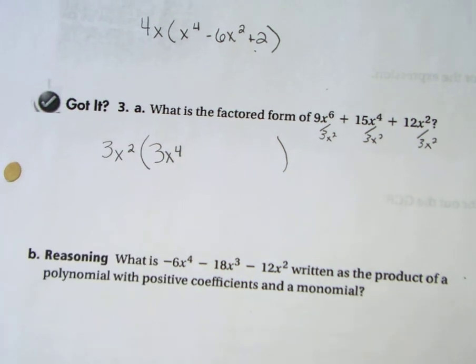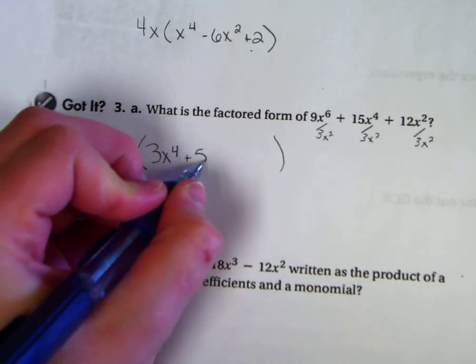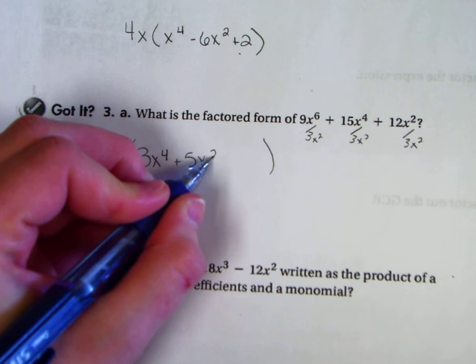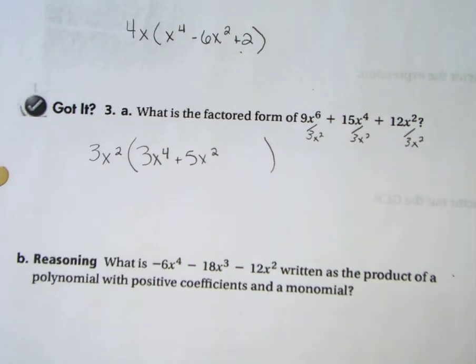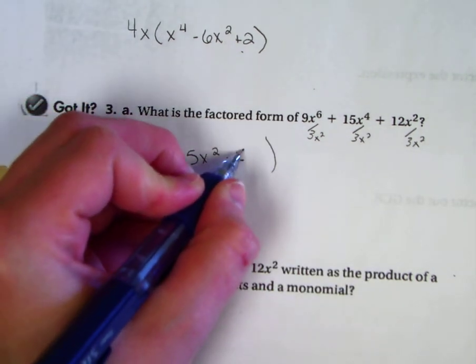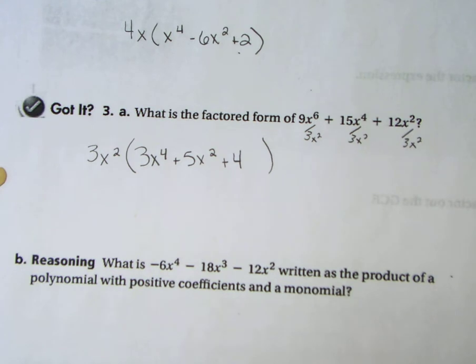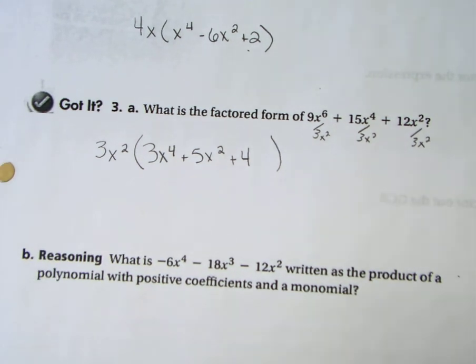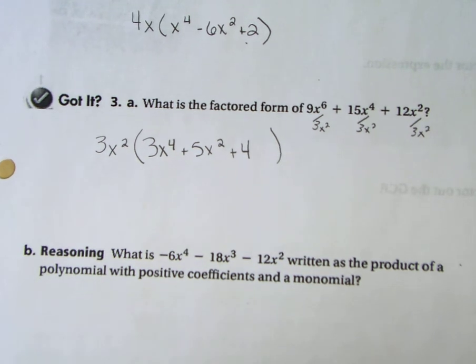15 divided by 3 is 5. x^4 over x^2 means there's 2 left over. 12 divided by 3 is 4. Notice the addition signs. x^2 divided by x^2 is, that's it. That is the factored form of the original polynomial.